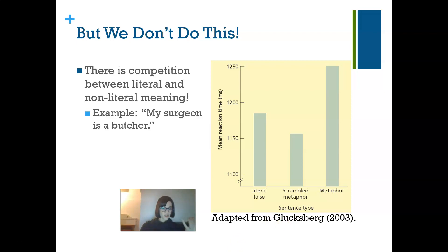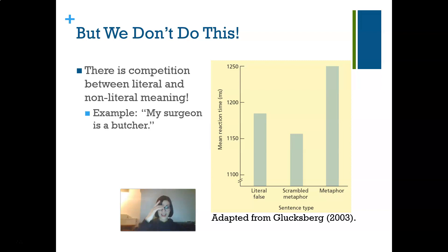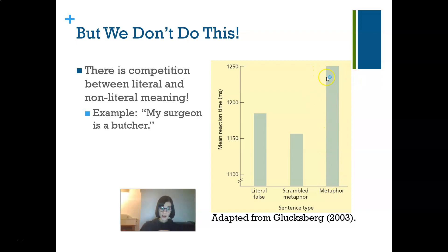For example, if I say 'my surgeon is a butcher,' do I mean he works in a butcher shop hacking up meat, or that he's not a very good surgeon with a very heavy hand? According to the standard pragmatic model I should eventually reach the second meaning, but the data show we actually process both simultaneously. Looking at data adapted from Glucksberg 2003, participants presented with literally false statements, scrambled metaphors, or metaphors showed that for metaphors, reaction time to process the true meaning is much larger, indicating competition between literal and non-literal meanings.